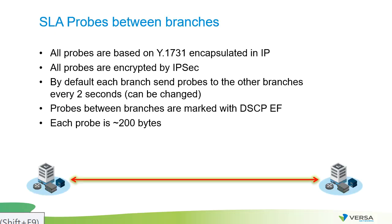All the SLA probes between branches are based on the Y.1731 protocol encapsulated inside of IP. All the probes are going to be encapsulated and encrypted by IPSec, so you won't be able to differentiate probes from the regular data plane traffic. By default, all the SLA probes between branches will have the DSCP value of expedited forwarding.